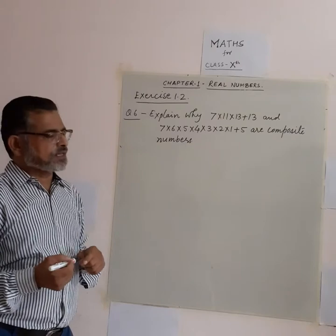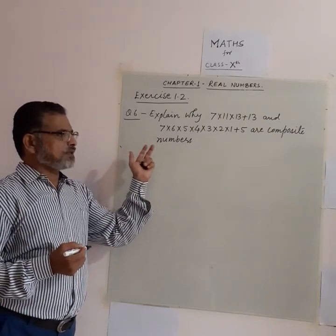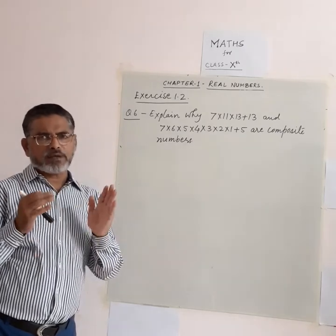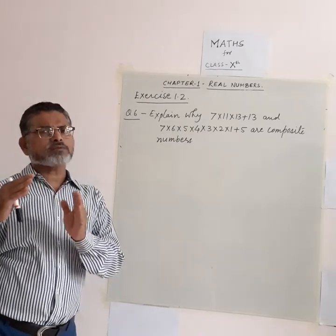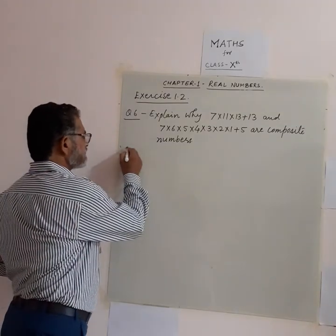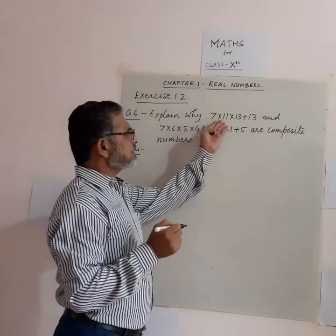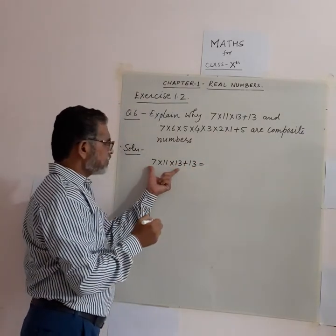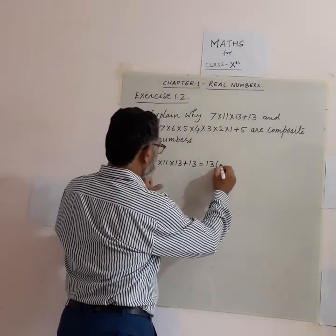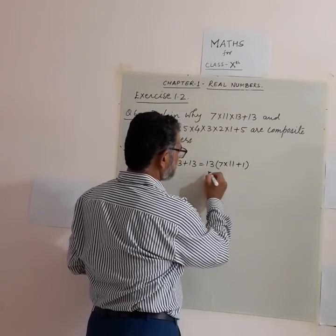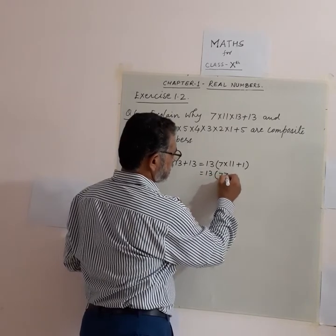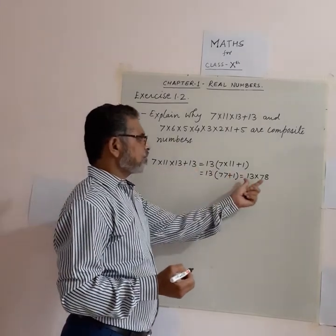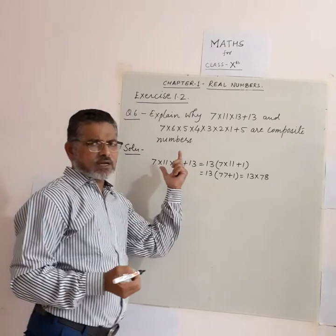Question 6: We have to show that certain expressions are composite numbers. Composite numbers are those which can be expressed as a product of two or more different numbers. The first expression is 7 × 11 × 13 + 13. Here, 13 is common in both terms, so we factor it out: 13 × (7 × 11 + 1) = 13 × (77 + 1) = 13 × 78. Clearly, this is a product of two different integers, so it is composite.